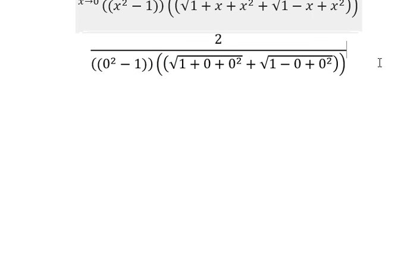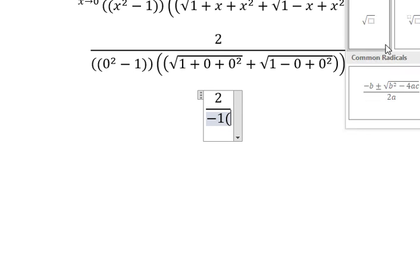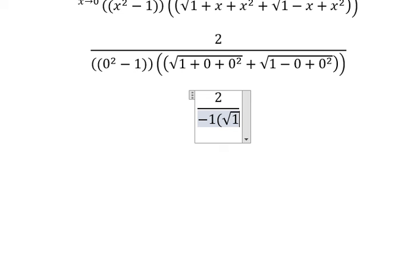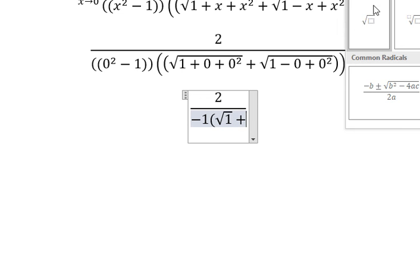So we simplify. And we get 2 over negative 1 multiplied with the square root of 1 plus the square root of 1.